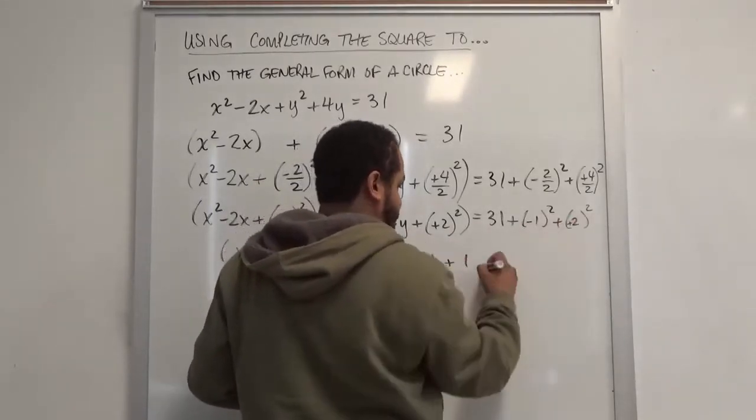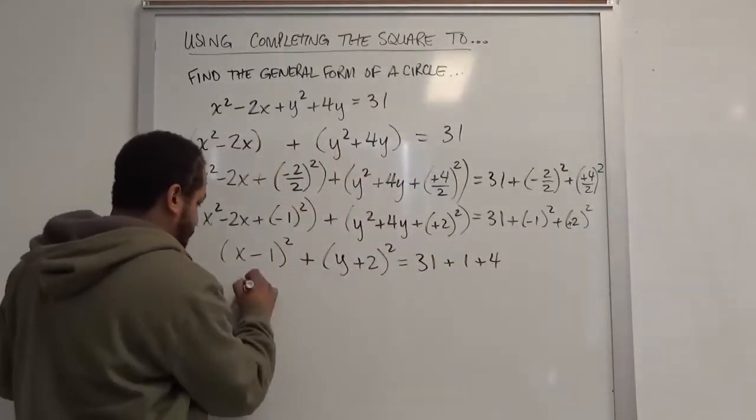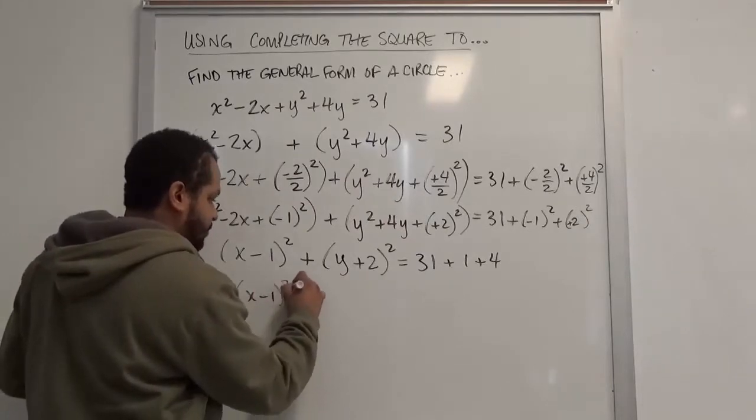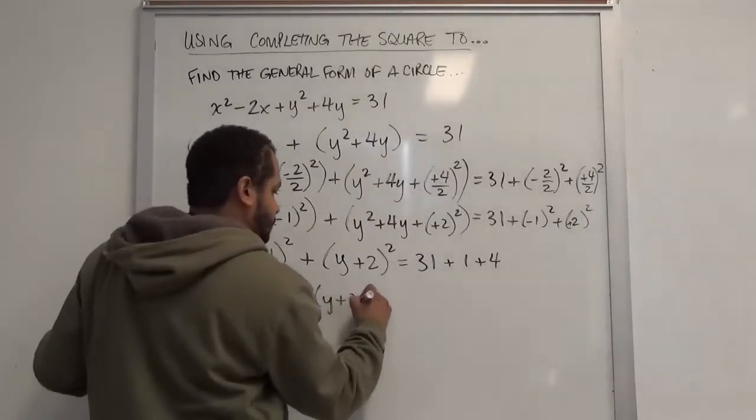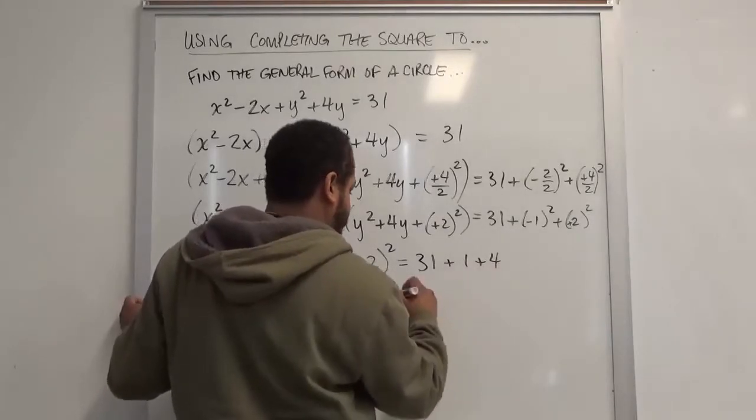Positive 2 squared is just 4. Now we have the completed square on the left-hand side here: x minus 1 squared plus y plus 2 squared equals 31 plus 1 plus 4 is 36.